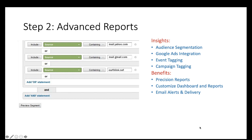Step two is the advanced events reports. Here we can further segment our audience into different groups and study their interests and behavior. For example, 18-to-24-year-olds may behave differently than older age groups — they like different products and have a different purchase process. We can integrate with Google Ads and tag events such as a user watching a video or downloading files.